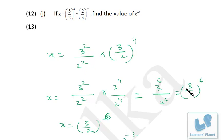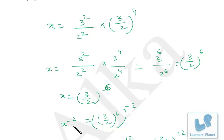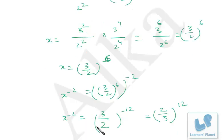Let me do a quick recap. x equals 3/2 squared, that's 3 squared over 2 squared. To convert minus 4 to plus 4, we take the reciprocal of 2/3, which is 3/2, then expand to get x equals 3/2 raised to 6. We have to calculate x raised to minus 2, so I take the power minus 2 on both sides: x raised to minus 2 equals 3/2 raised to 6 raised to minus 2, so that's 3/2 raised to minus 12. To convert to a positive exponent, take the reciprocal of the number inside the bracket. I hope you are clear.